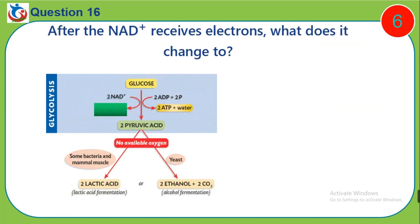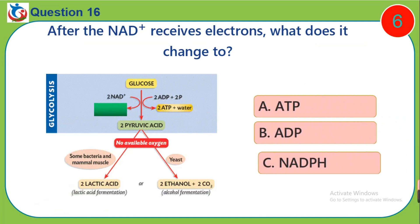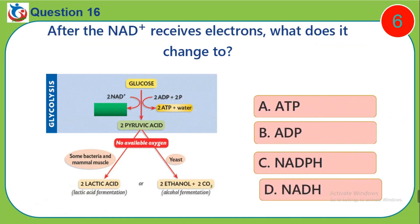Question 16. After the NAD+ receives electrons, what does it change to? A, ATP. B, ADP. C, NADPH. D, NADH.